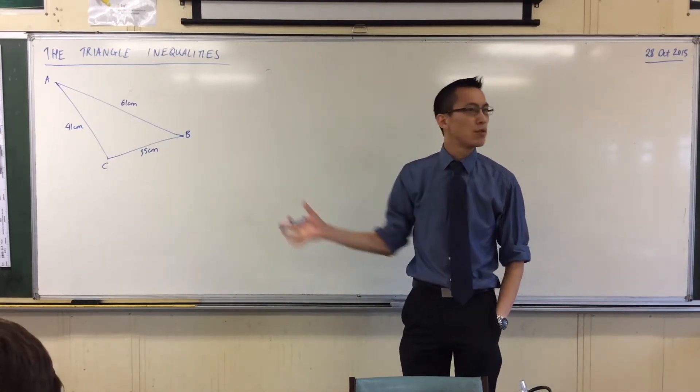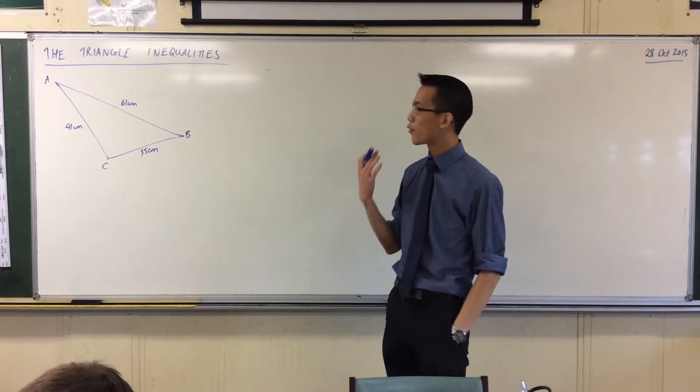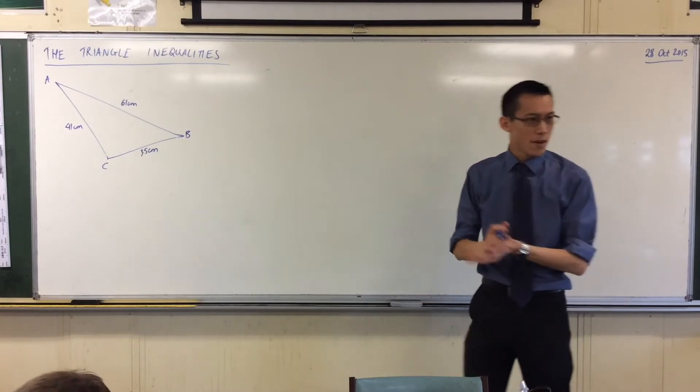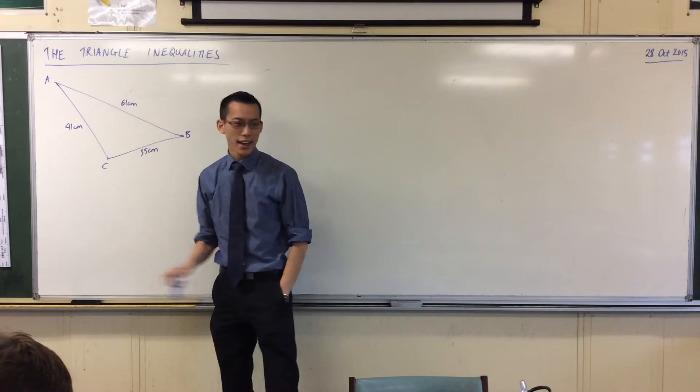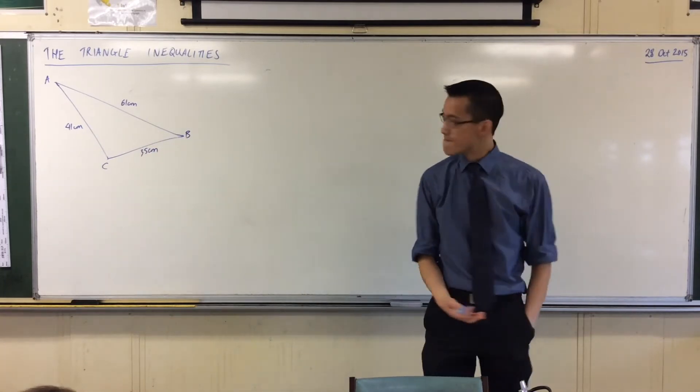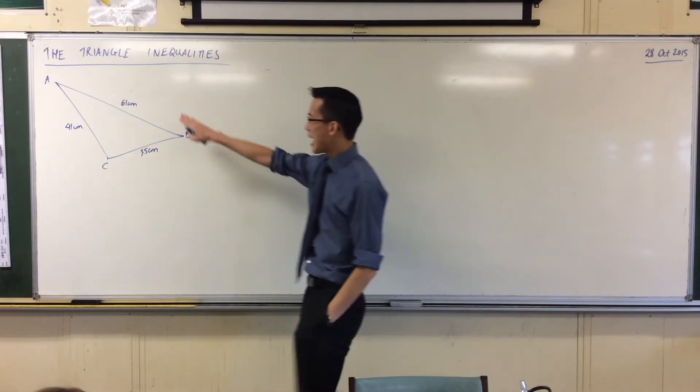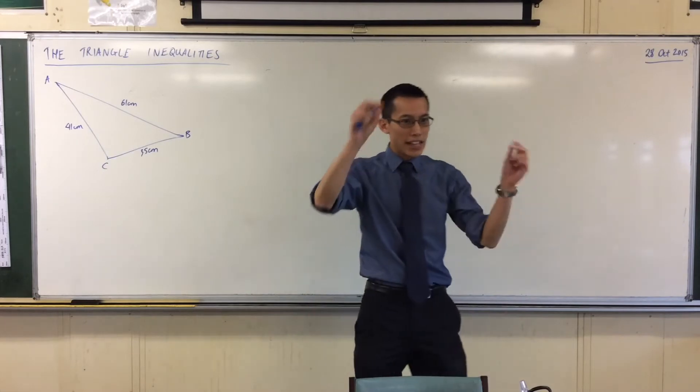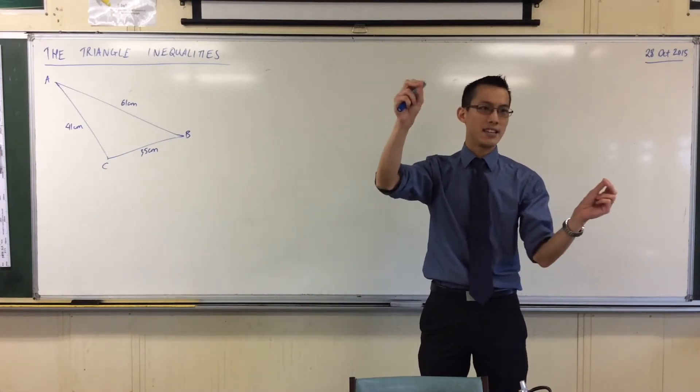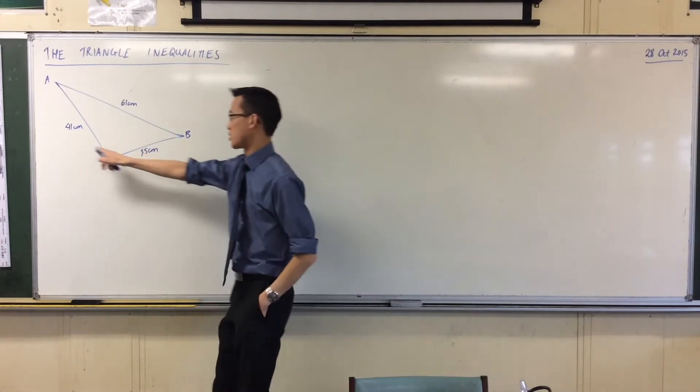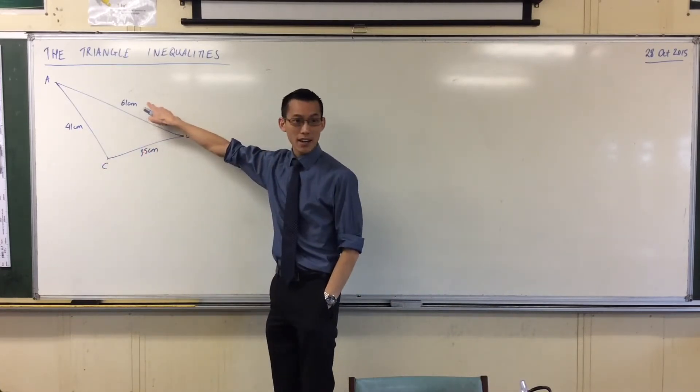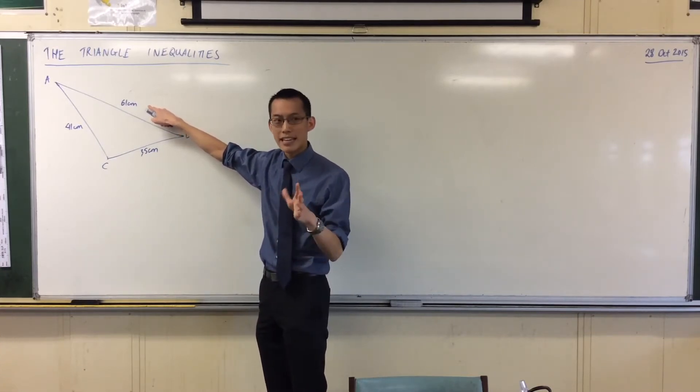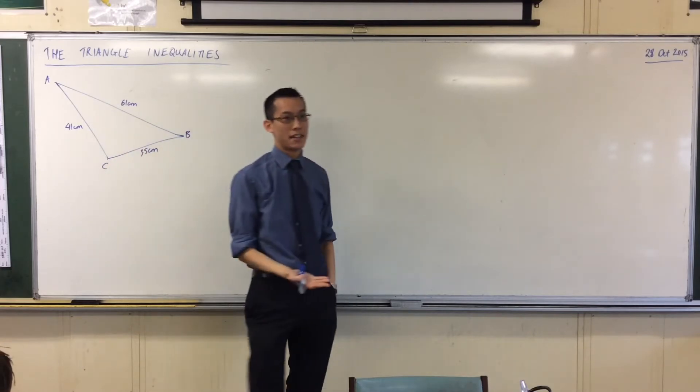But what I want to point out is a very simple fact about triangles. One that you've known for a very long time, but have never really had to appeal to. Have a look at the length of your triangle. Look at the length of the sides. Can you see, it's kind of plainly obvious that if I take any of these sides, any individual side, for example, let's have a look at AB. The length of AB cannot possibly exceed the sums of the lengths of the other two sides. Do you see that?